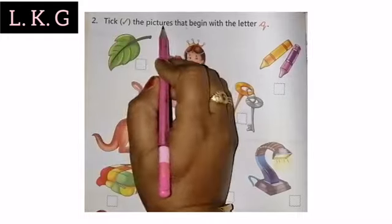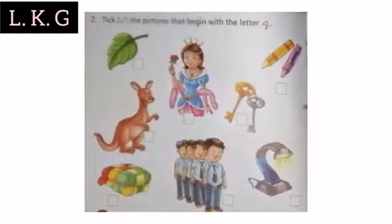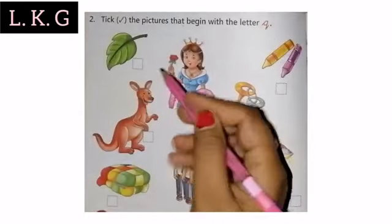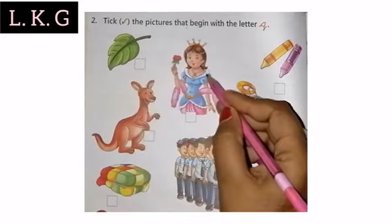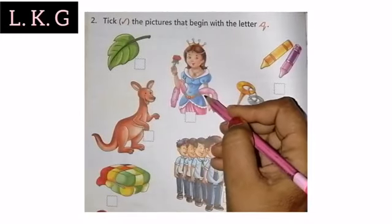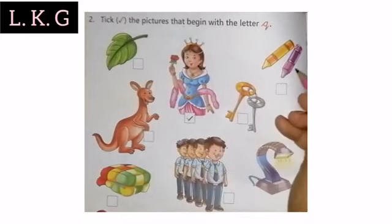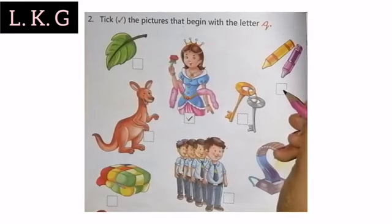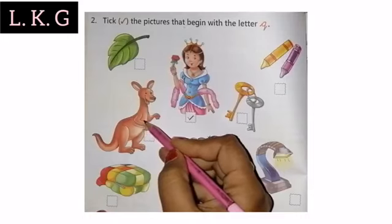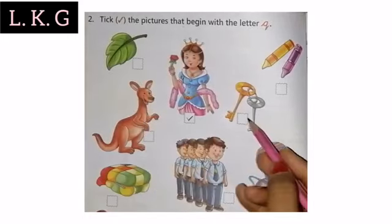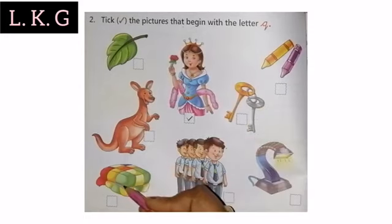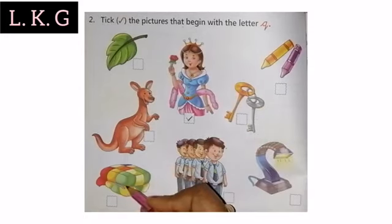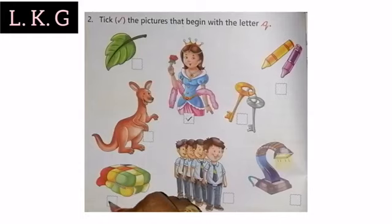Number 2 — Tick the pictures that begin with the letter Q. You have to tick those pictures that begin with the letter Q. Look at this picture — this is a picture of a leaf. Leaf starts from L, so we will not tick here. Now look at this picture — this is a picture of Queen; it starts from Q, so we will tick here. This is a picture of Kangaroo — Kangaroo starts with K, so we will not tick here. This is a picture of Ki — Ki also starts with K, so we will not tick here. Look at this picture — this is a picture of a quilt. Quilt means Rajai, so this is Q; we will tick here.